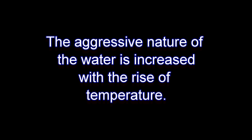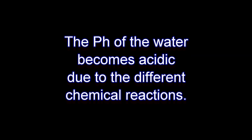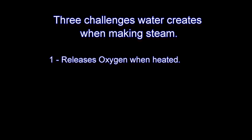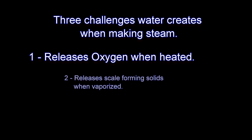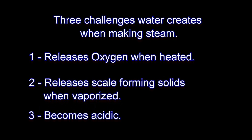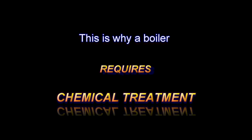The aggressive nature of water increases with the rise of temperature, and the pH of the water becomes acidic due to these chemical reactions. The water has now left three challenges: first, the oxygen released into the steam system; second, the growing concentration of calcium ions; and lastly, the dangerous lowering of the pH, leaving the water in an acidic state. This is why a boiler requires chemical treatment.